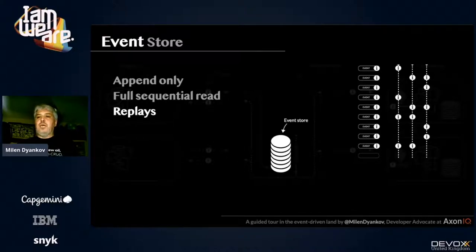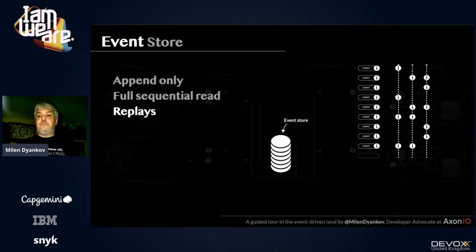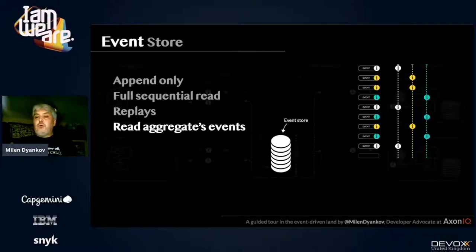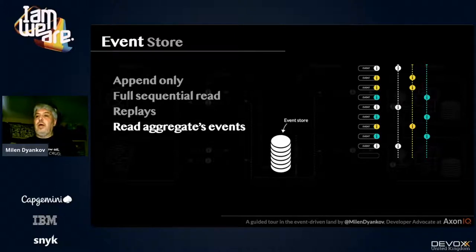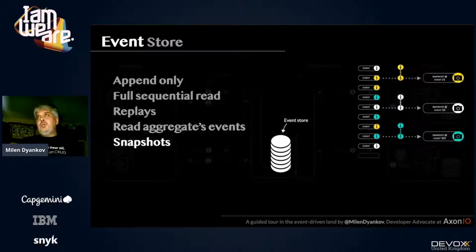The event store must allow full sequential read — any component should be able to say 'give me all events from first to last.' It also needs to support replay: each component can say 'give me all the events I'm subscribed for from a certain point in time.' Different components will get different sets of events. Producers — or in DDD language, aggregates — need to ask the event store for events they emitted themselves, in order to rebuild their state.